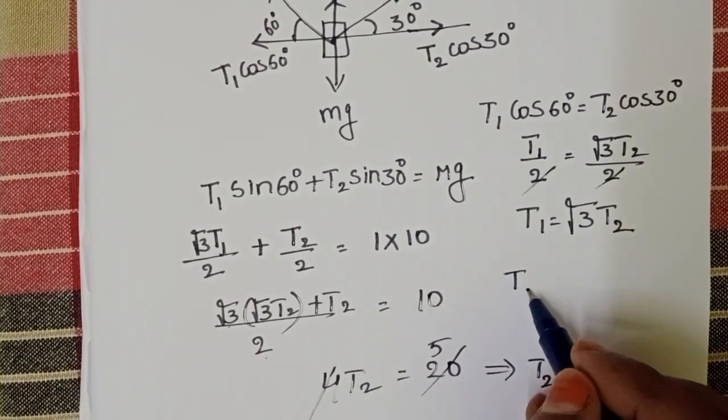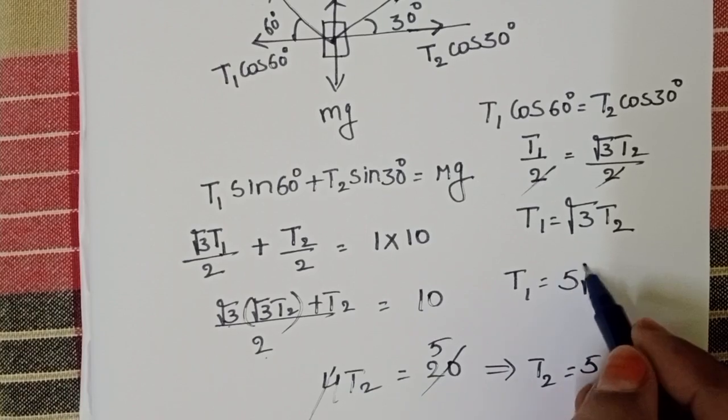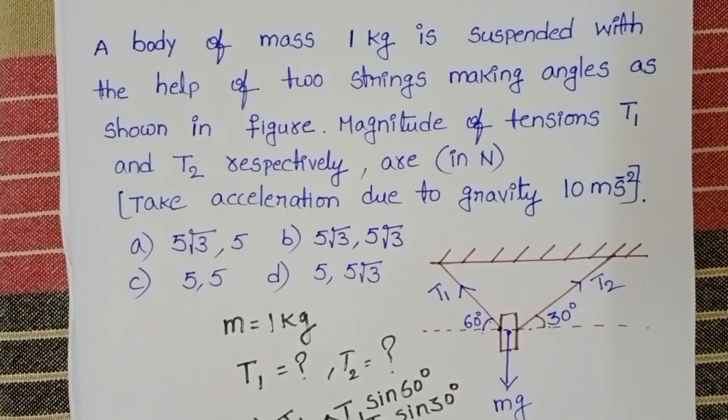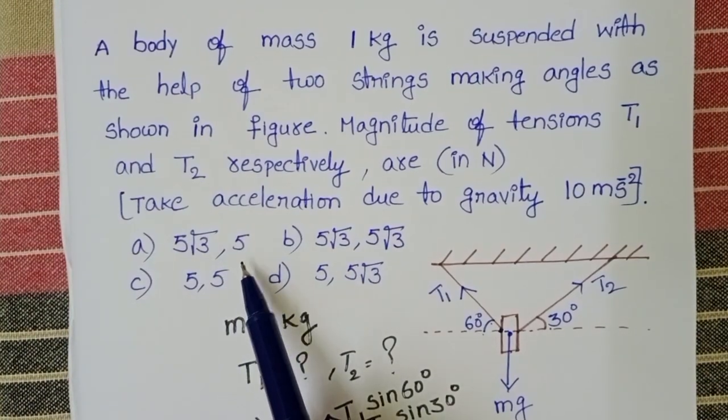Substitute here, then T1 equals 5 root 3 newtons. T1 is 5 root 3 and T2 is 5. First option is correct.